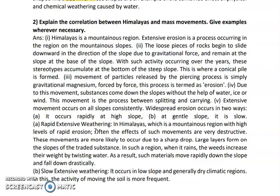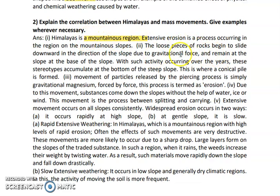The last question is: explain the correlation between the Himalayas and mass movement. The Himalaya is a mountainous region totally covered by high terrain, with high peaks as well as high slopes. Loose pieces of rocks begin to slide downwards due to gravitational forces. For mass movement to occur, you require a big elevation and a slope — material from high height comes down because of gravitational pull. All these materials accumulate at the bottom of the steep slope and are called a conical pile.